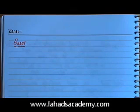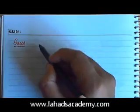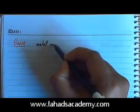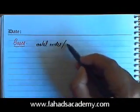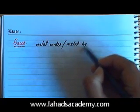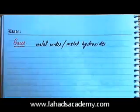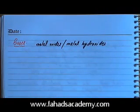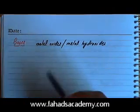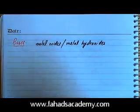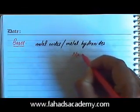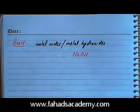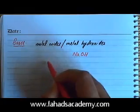Before continuing further on acids, we first have to give a brief introduction on bases. All metal oxides and metal hydroxides are bases — some are amphoteric, which I'll explain later. A hydroxide is something which has an OH ion; for example, sodium hydroxide is NaOH. A metal oxide has O²⁻ attached to it, so sodium oxide is Na₂O, where the charges cancel out.